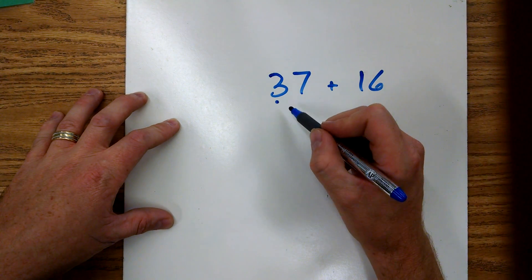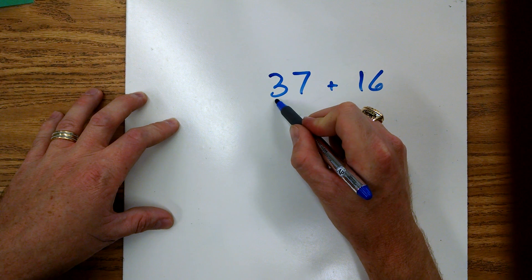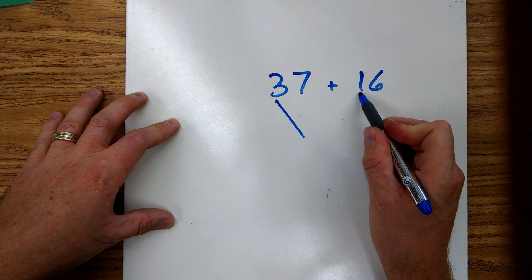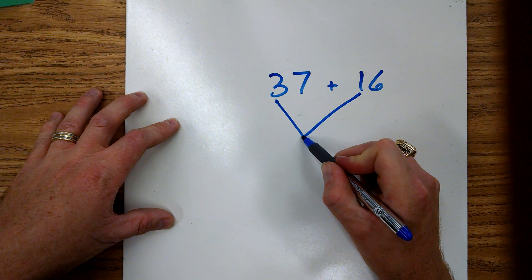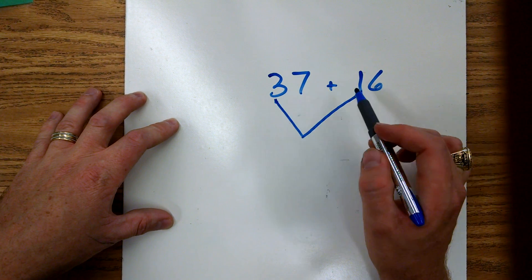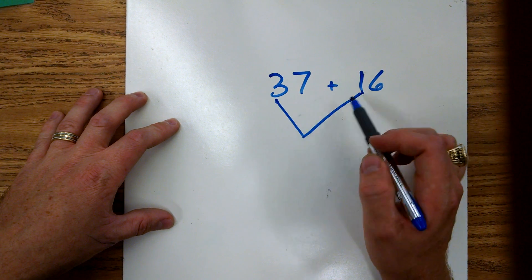So three tens we're going to add the three tens to our one ten. We got to make sure that we're only adding the right, that each place to that same place in the other number.